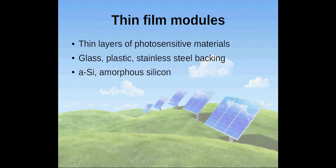Thin film PV modules are made by depositing extremely thin layers of photosensitive materials in glass, plastic or stainless steel backing.